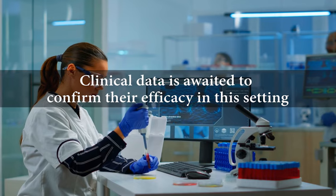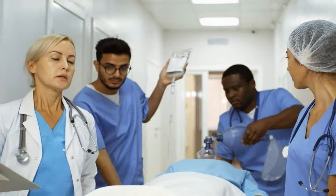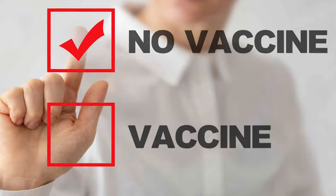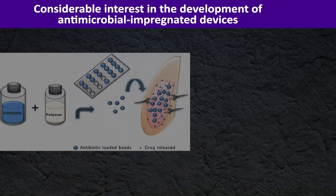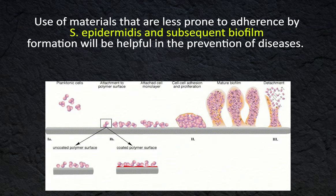Other important features: people who work in hospital settings are more likely to carry antibiotic-resistant strains of this organism. There is no vaccine against S. epidermidis. There is considerable interest in the development of antimicrobial-impregnated devices such as central intravascular catheters and prosthetic heart valves, which would help in prevention of infections. Additionally, use of materials less prone to S. epidermidis adherence and subsequent biofilm formation will be helpful in the prevention of disease.